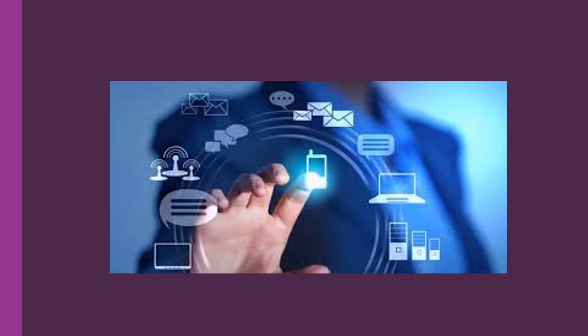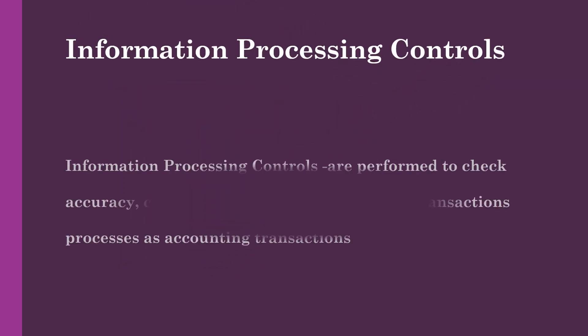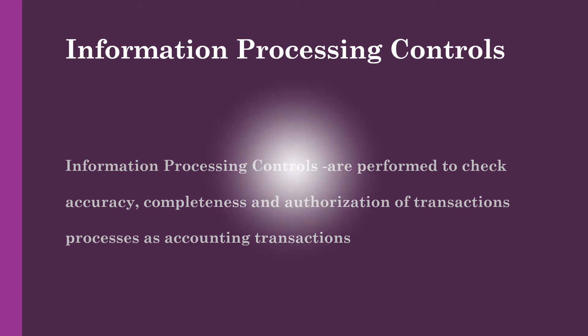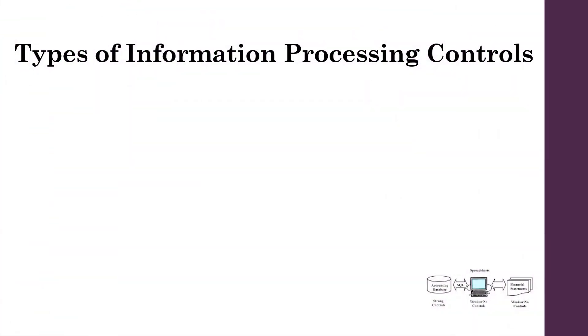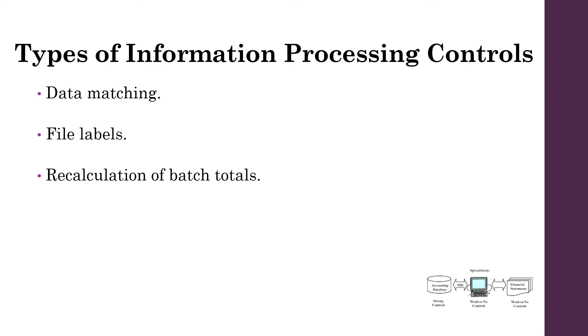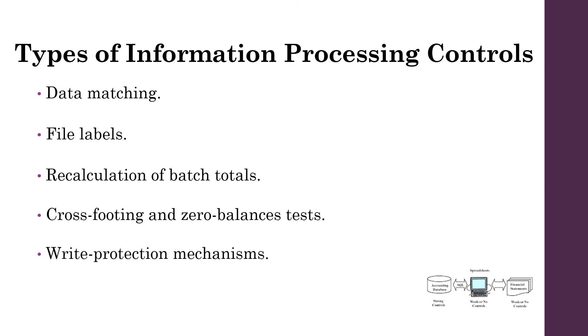When data is processed, a variety of internal controls are used to ensure that incoming data is processed according to established rules. Information processing controls are performed to check accuracy, completeness, and authorization of transaction processes as accounting transactions. There are several types of information processing controls, such as data matching, file labels, recalculation of batch totals, cross-footing and zero balance test, write protection mechanisms, and concurrent update controls.